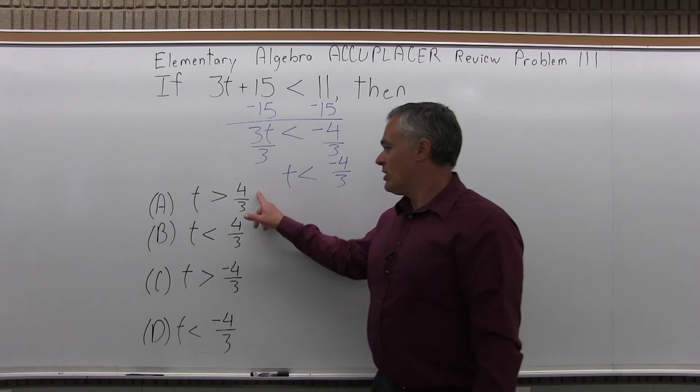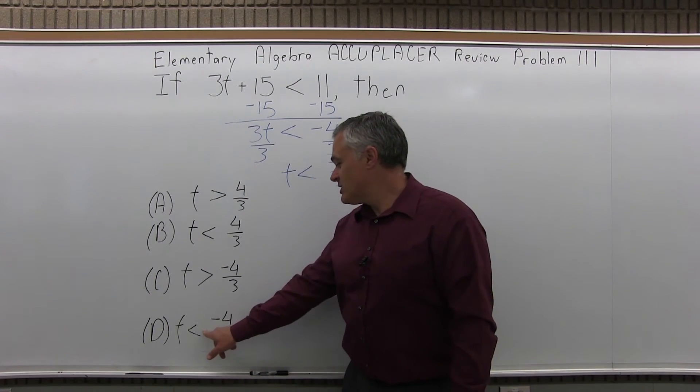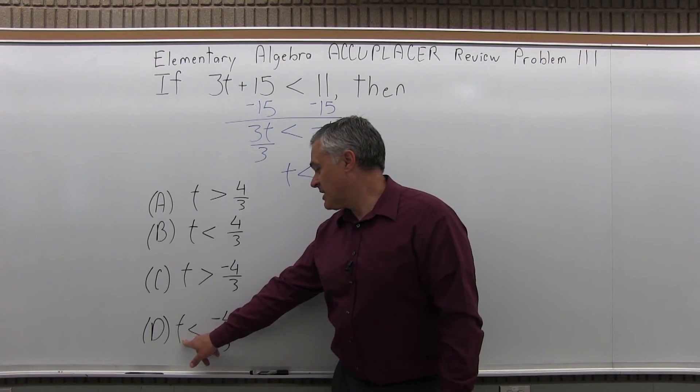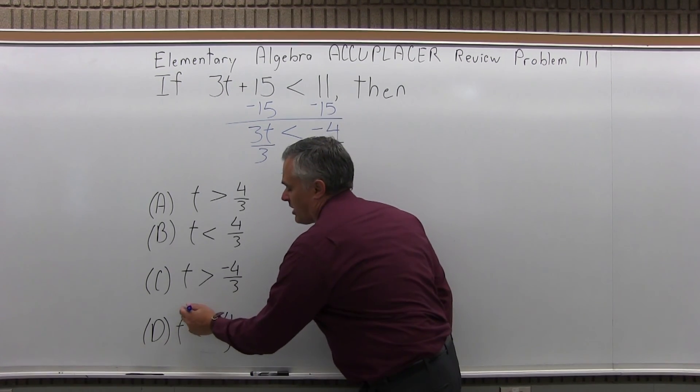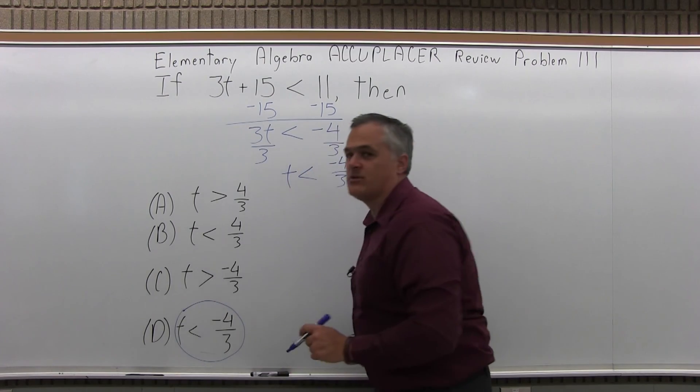And all these look so similar, so you really have to pay attention. It's option d that says the same as my answer, t is less than negative 4 thirds. So, for problem 111, the answer is option d.